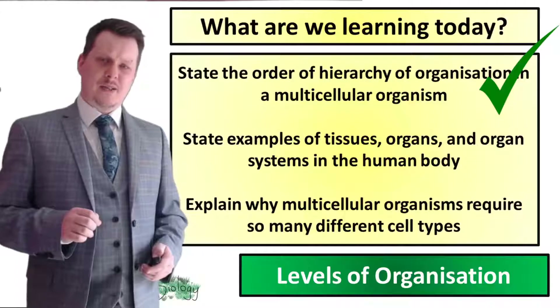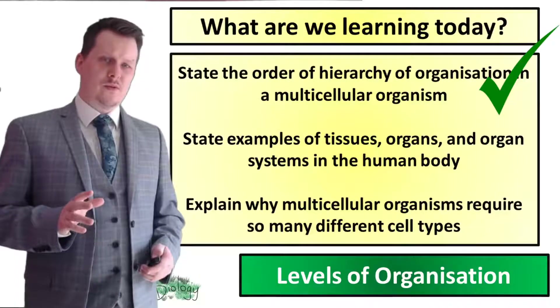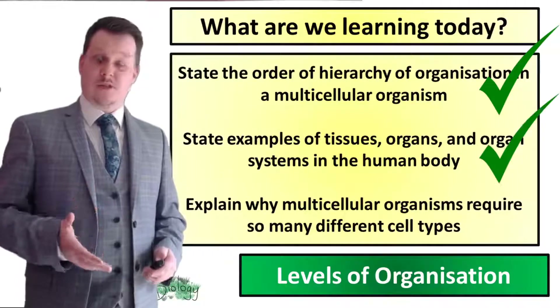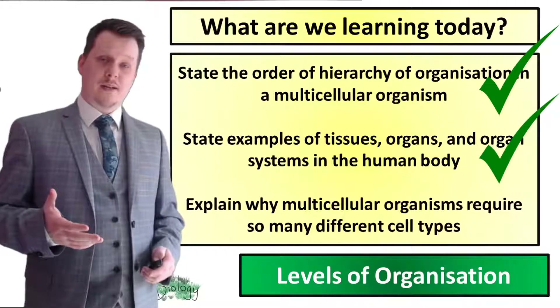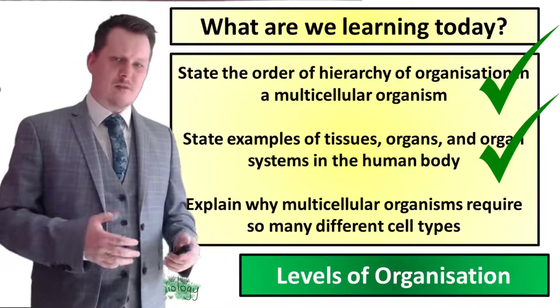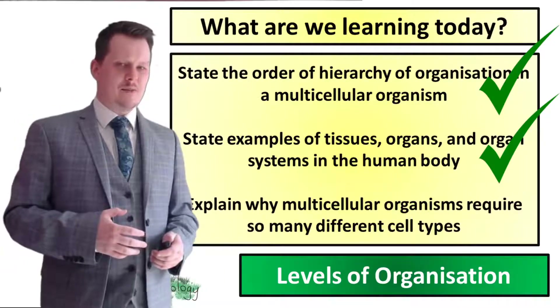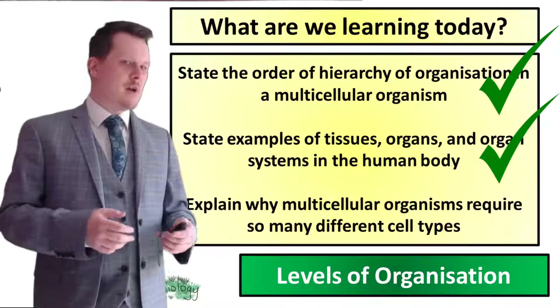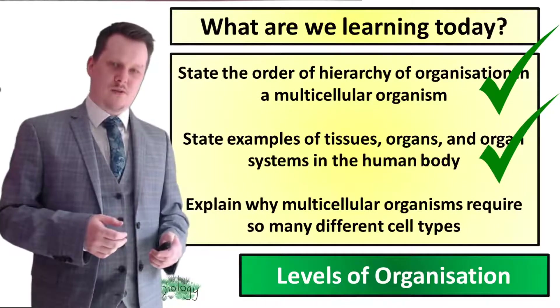So now we've stated some examples of tissues, organs, and organ systems in the human body, but we still need to explain why we need so many different cell types and why we need so many different tissues and organs. Well, this depends on the situation you are in.